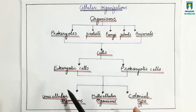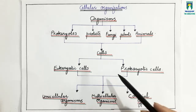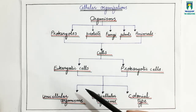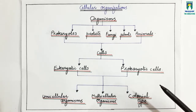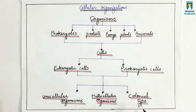All of these cells are organized in three ways to make the bodies of organisms. The organization can be unicellular, multicellular, or colonial type of organization. Unicellular organization makes unicellular organisms, multicellular organization makes multicellular organisms, and colonial type of organization makes colonial type of organisms.